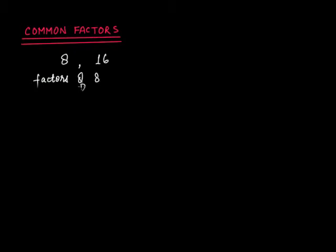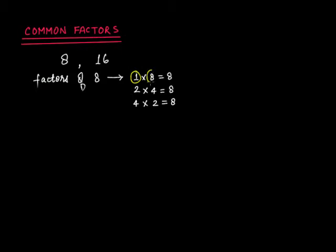To find the factors of 8: 1 times 8 is 8, 2 times 4 is 8, and 4 times 2 is 8. These are the only possibilities. So the factors of 8 are 1, 2, 4, and 8.